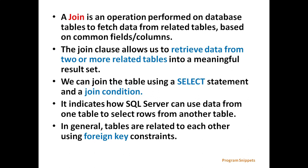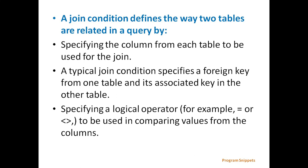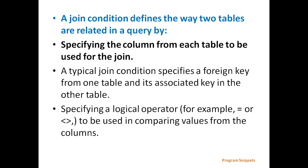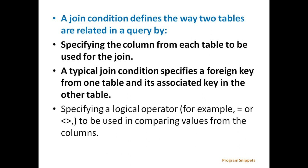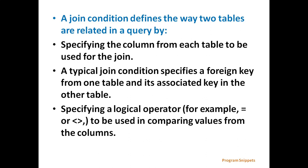In general, tables are related to each other using a foreign key constraint. A JOIN condition defines the way two tables are related in a query. We can define a JOIN condition by specifying the column from each table to be used for the JOIN. A typical JOIN condition specifies a foreign key from one table and its associated key in the other table, along with a logical operator used to compare values from the columns.